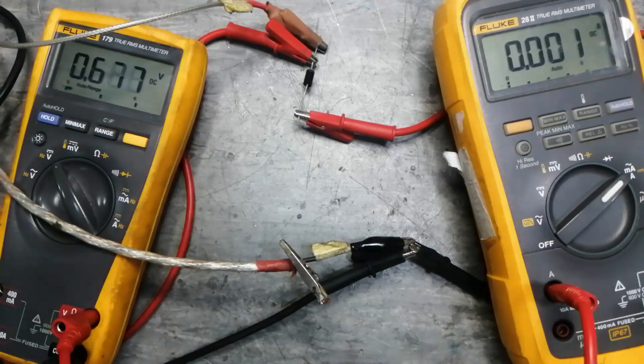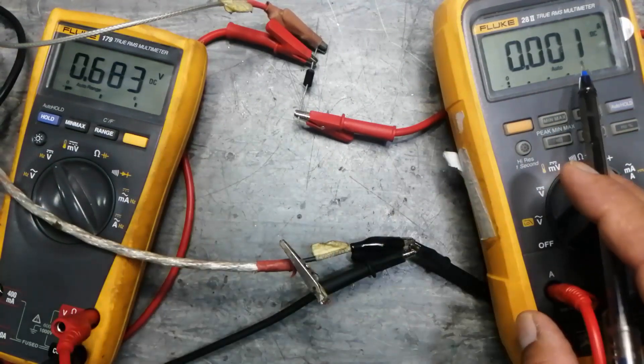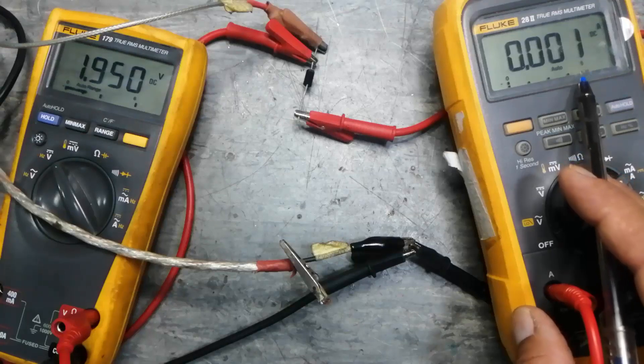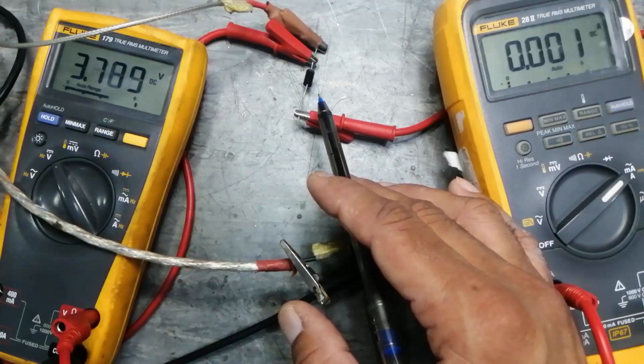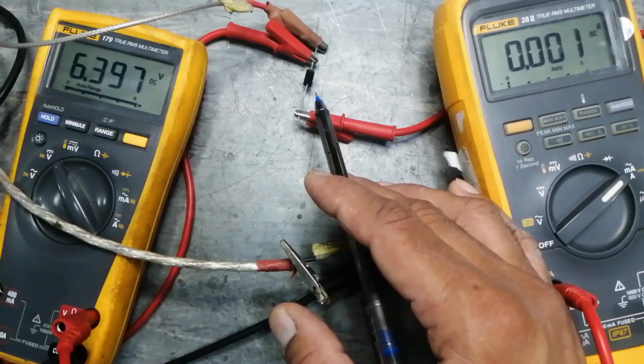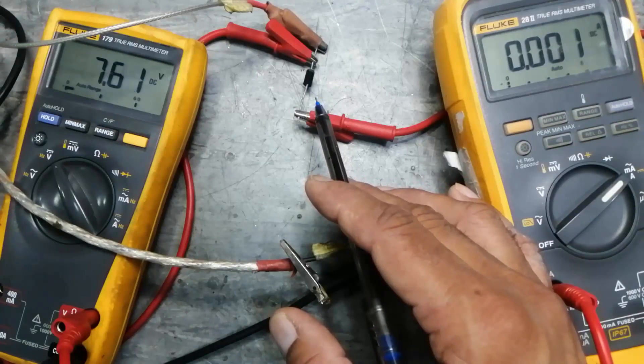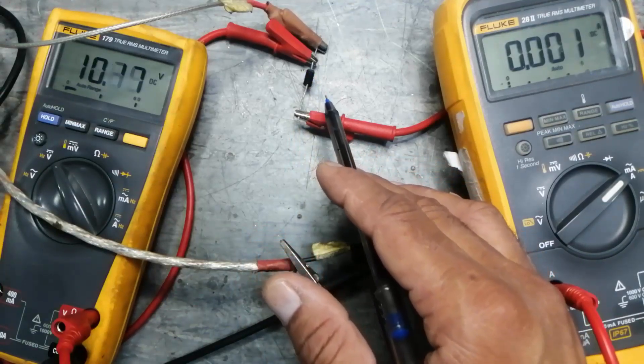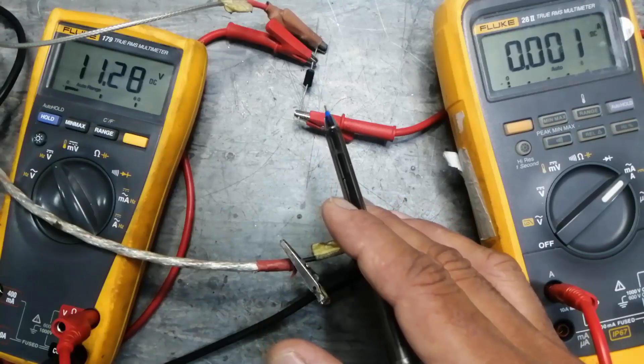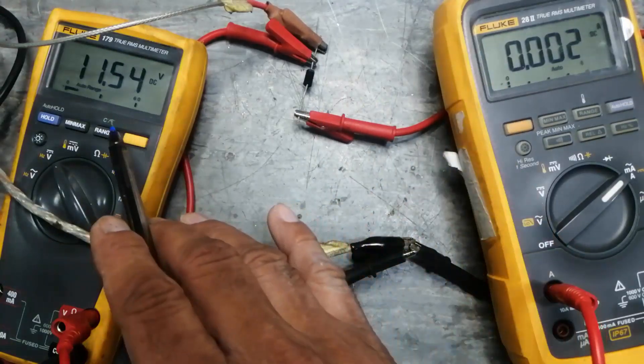Now I will increase the voltage. This time there is no current flow. It is 12A, that means 12 volt unidirectional voltage suppressor. No current is flowing until the voltage increases beyond its rated voltage, which is 12 volts.